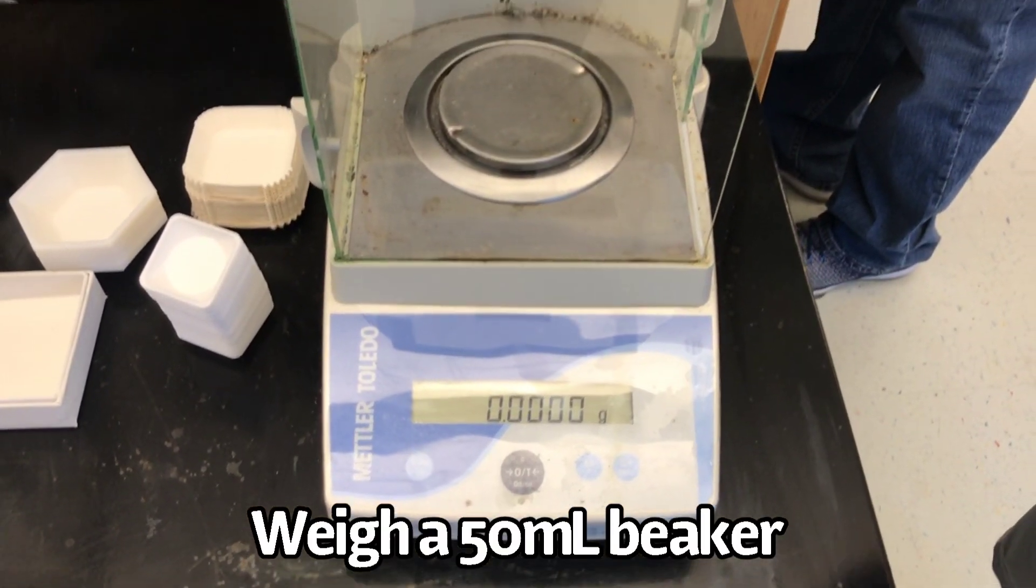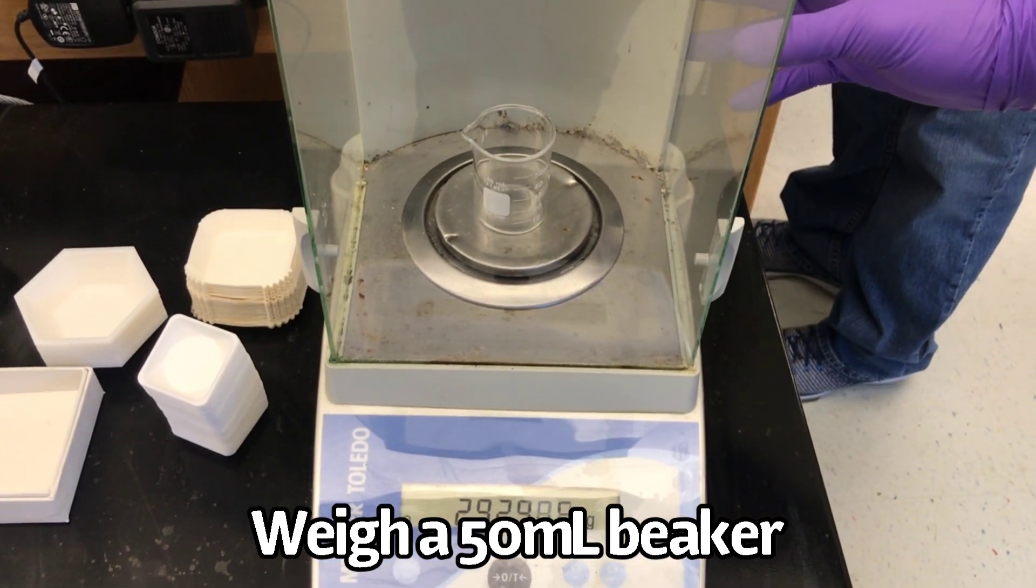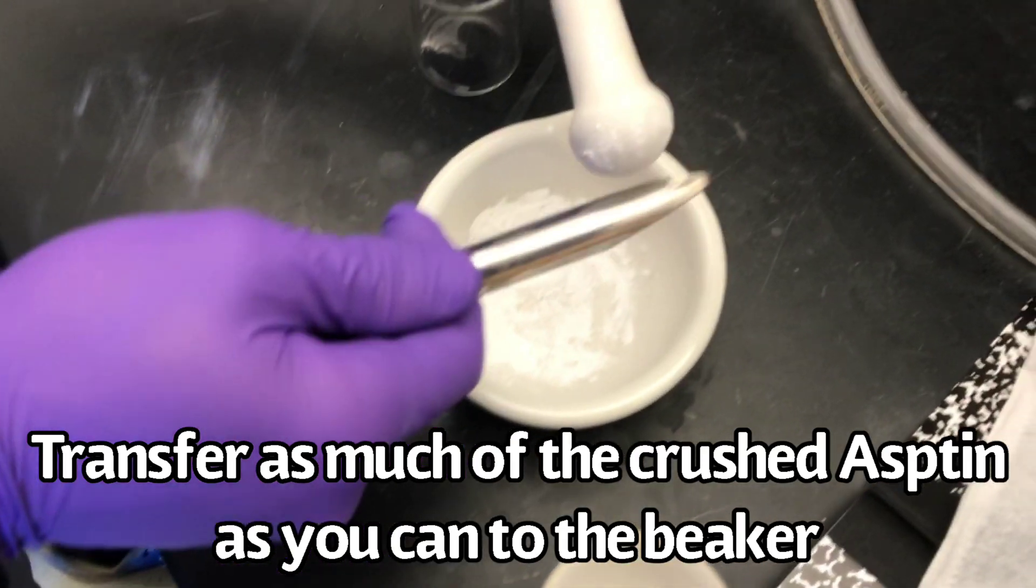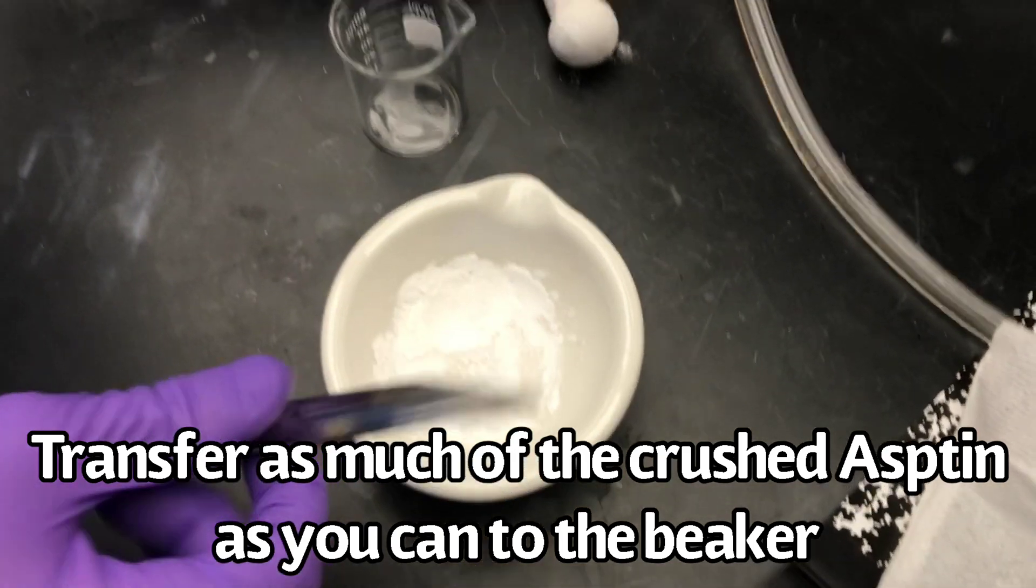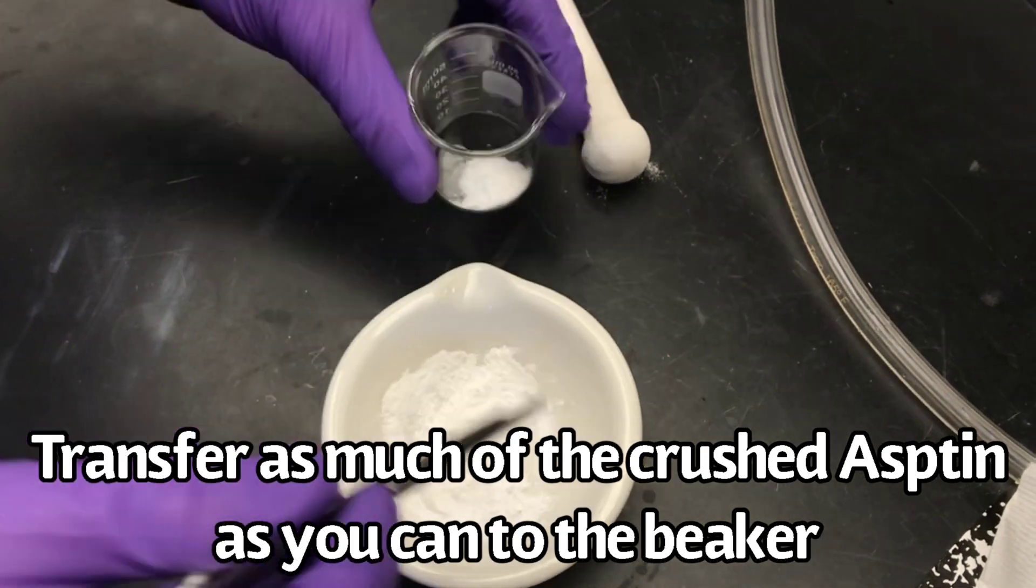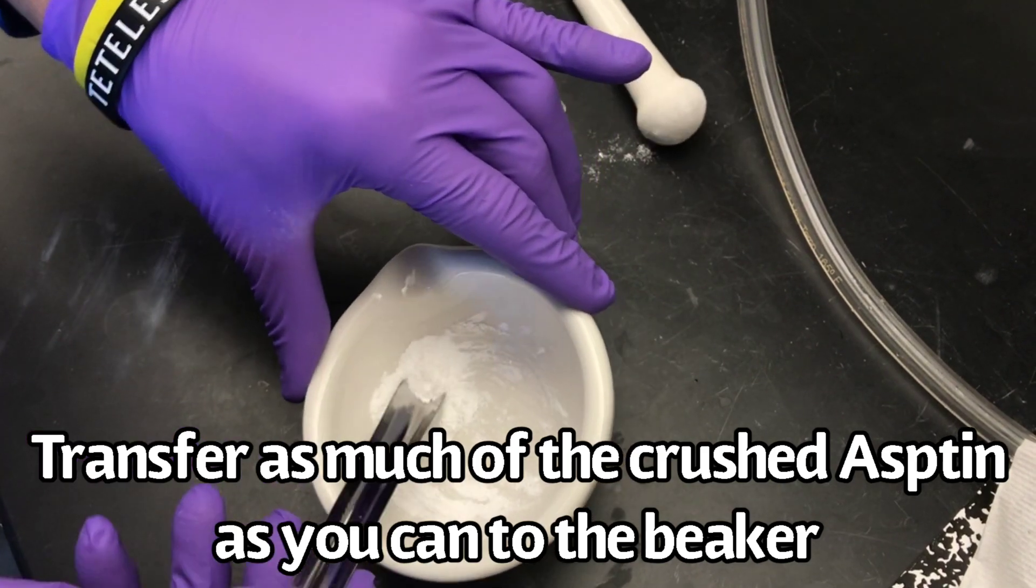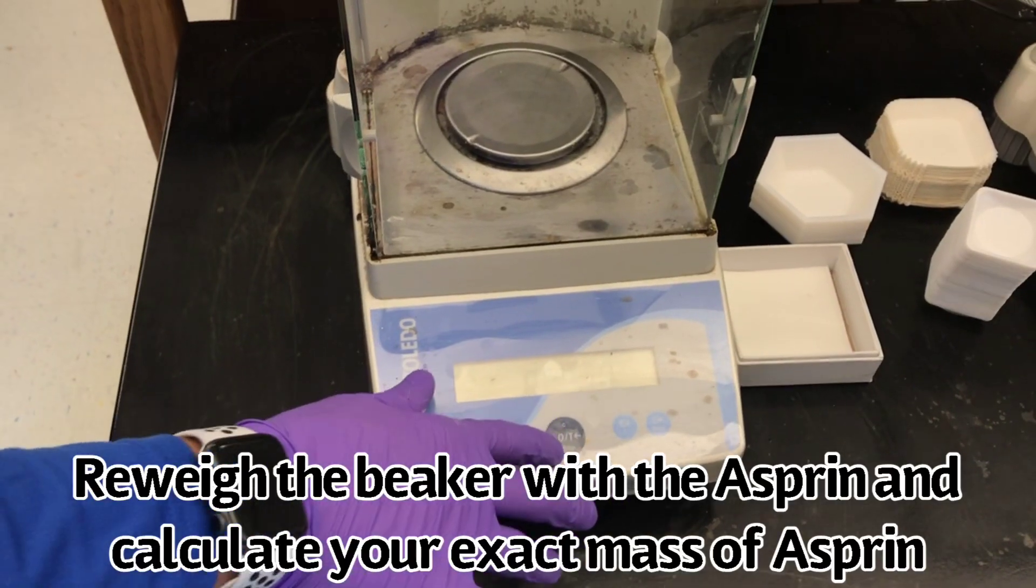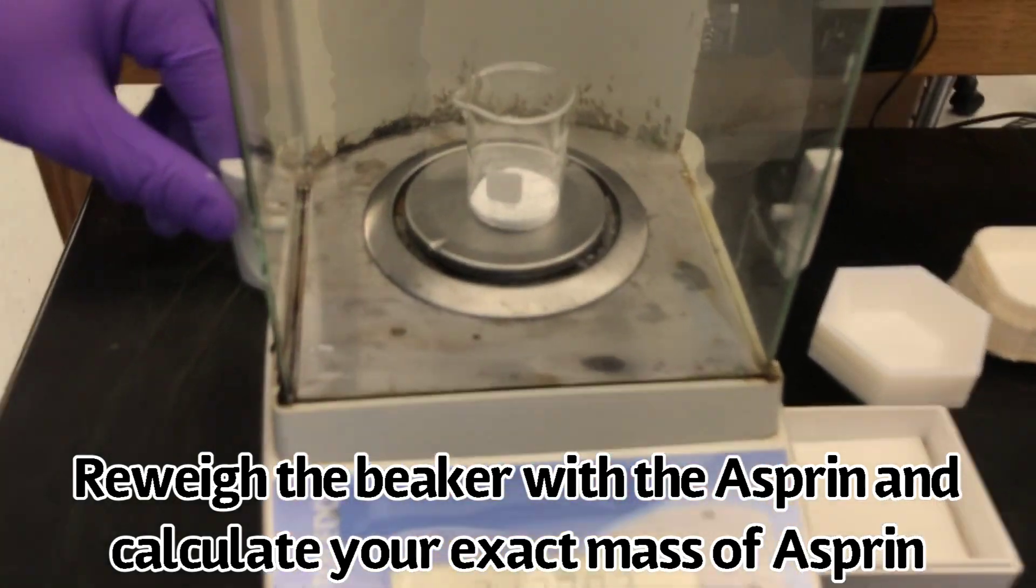Next, weigh a 50ml beaker. Transfer as much of the crushed aspirin tablet into the beaker as you can. Reweigh the beaker with the crushed aspirin and calculate the exact mass of aspirin used.